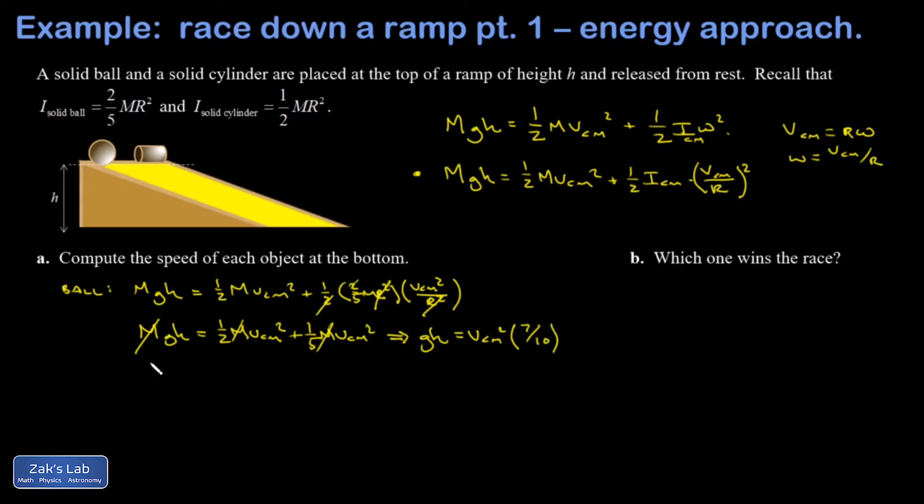Solving for V center of mass, I multiply by 10 sevenths and take the square root, so I have the square root of 10 GH over seven. Another way to write this, which is handy for comparison, is I could pull out the root 10 over seven and write this as a decimal: 1.195 root GH.